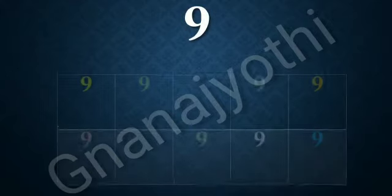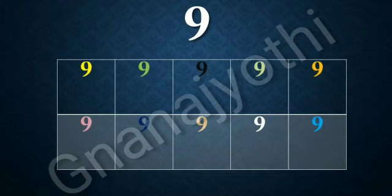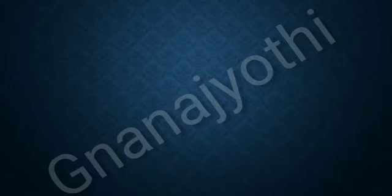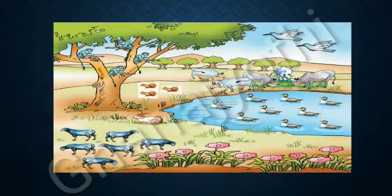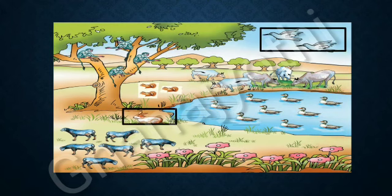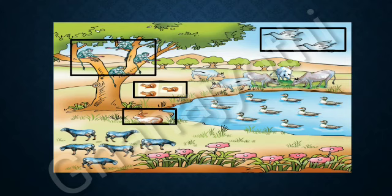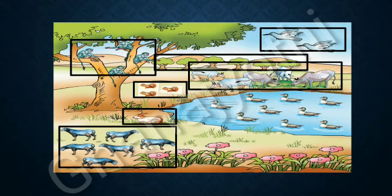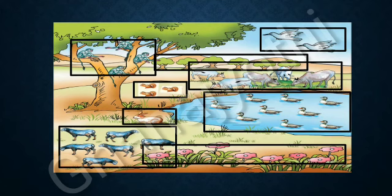9 can be written like this. Now look at this picture and count the things. In this picture, we have 1 rabbit, 2 birds, 3 squirrels, 4 monkeys, 5 cows, 6 sheep, 7 trees, 8 flowers and 9 ducks.